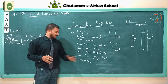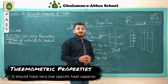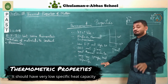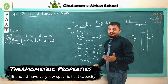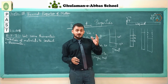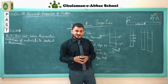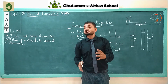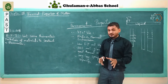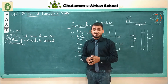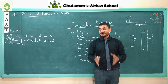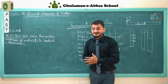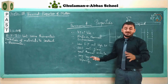The last property for a thermometric liquid in a liquid-in-glass thermometer is that the substance or material should have a very low specific heat capacity value. Specific heat capacity is a thermal constant.